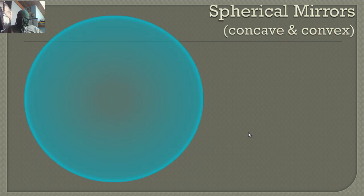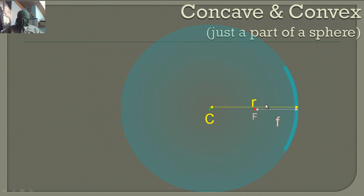There are also spherical mirrors. We have two different kinds: concave and convex. A concave or convex mirror is just a part of a sphere — imagine a huge mirrored ball; we're only talking about one chunk of it.